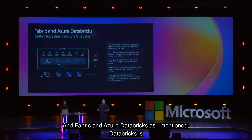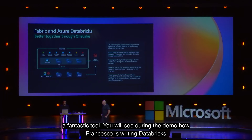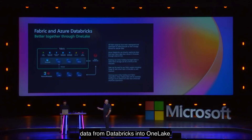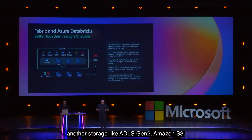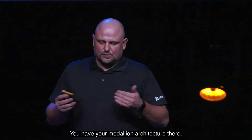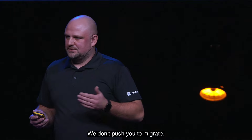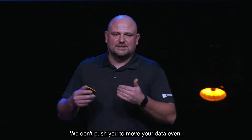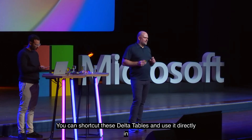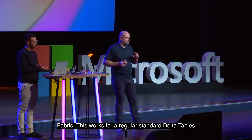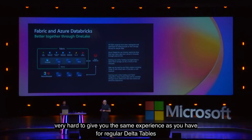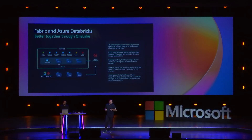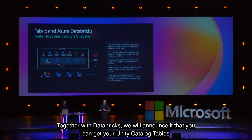Databricks is a fantastic tool — you'll see in the demo how Francesco writes data from Databricks into OneLake. If you've already implemented your lakehouse in ADLS Gen2 or Amazon S3 with a Medallion architecture, we don't push you to migrate. You can shortcut those Delta tables and use them directly in Fabric. This works for standard Delta tables. For Unity Catalog tables, our product groups are working hard on that — expect announcements soon that you'll be able to get your Unity Catalog tables inside OneLake effortlessly.